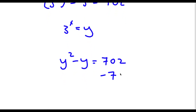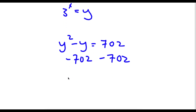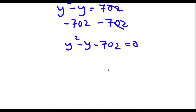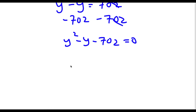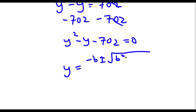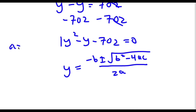Now, if I subtract 702 on both sides, I get y squared minus y minus 702 is equal to 0. To solve this, I'm going to be using the quadratic formula, which is negative b plus or minus the square root of b squared minus 4ac over 2a. In this case, a is 1, b is negative 1, and c is negative 702.